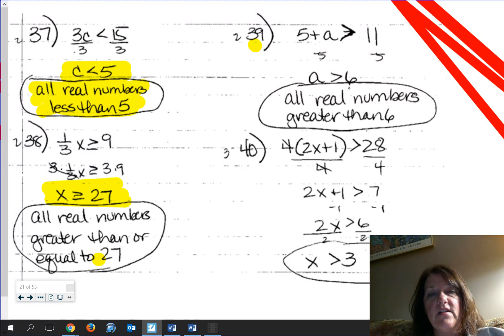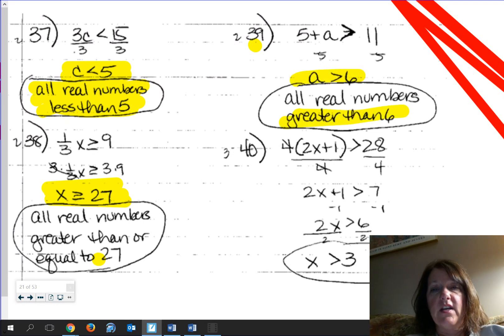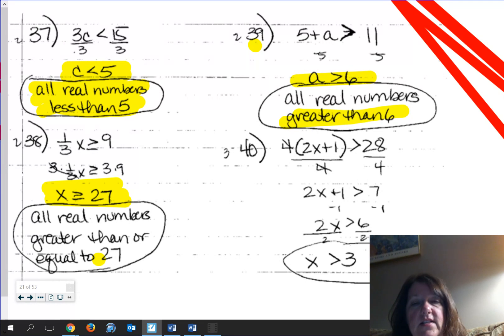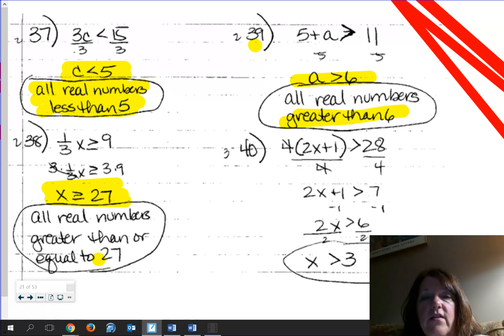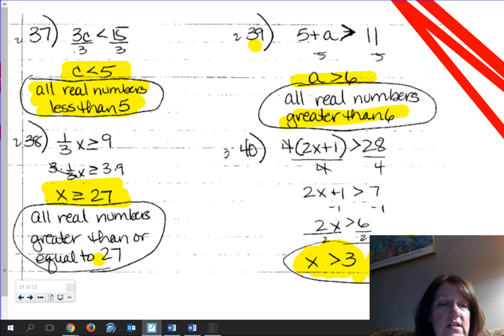Number 39, here's what happens. You subtract 5, you get everything greater than 6. All right, on number 40, you can either divide the 4 out first. Or you could have distributed it as well. But you should end up with x > 3. And to graph it, you'd have an open circle at 3, because it can't include it.